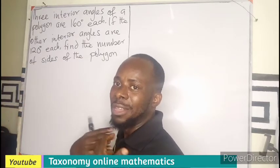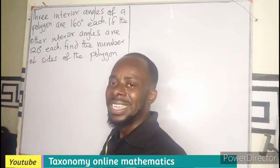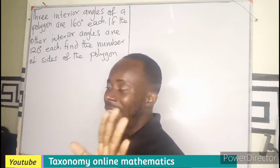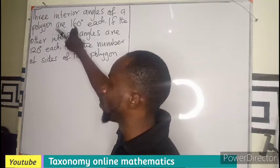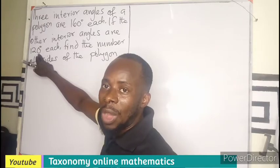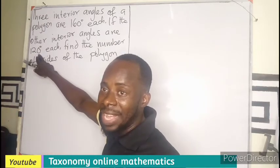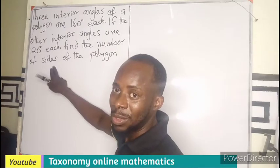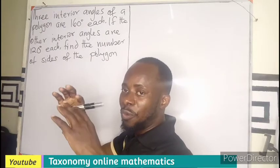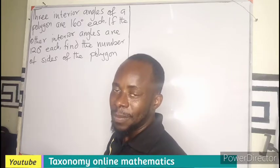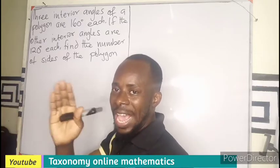In this case, if I assume that the number of sides is six, then it means this is going to be two of them and this is going to be three of them. So I will just add and get my answer. In order to find that, let's assume that the side is N, which we don't know.